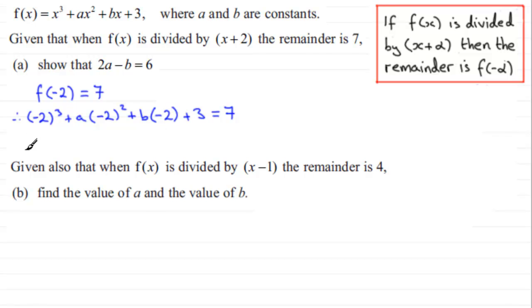And if we tidy this up, we therefore have minus 2 cubed which is minus 8, we've got here minus 2 squared which is 4, so that's going to be plus 4a, and then minus 2b plus 3, and that equals 7.